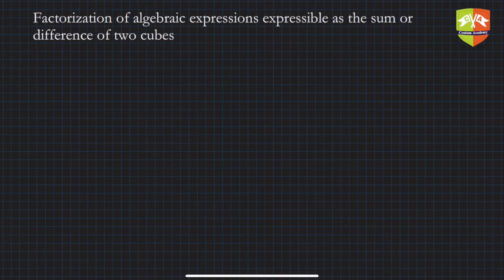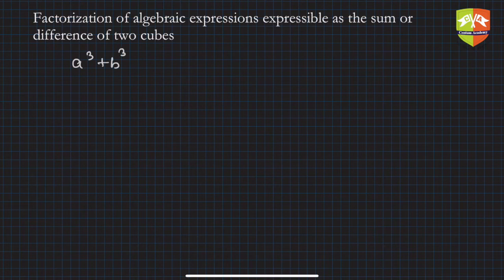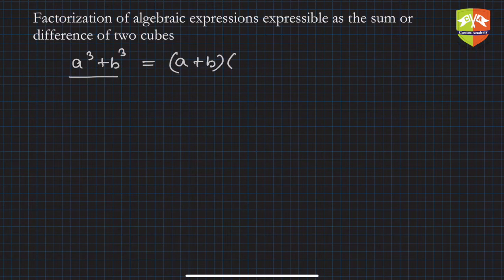In this methodology we will take up algebraic expressions which are expressible as the sum or difference of two cubes. For example, expressions like a³ + b³. In the previous series of lectures we have seen how to use algebraic identities to express these — a³ + b³ is simply (a + b)(a² - ab + b²).